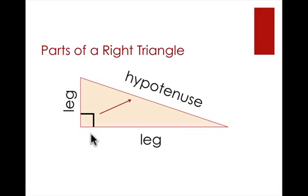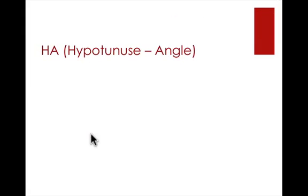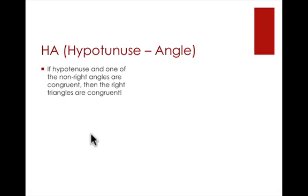The congruence theorems for right triangles are going to be based on H's and L's — hypotenuse and legs. The first one is called HA, or hypotenuse-angle. If you have the hypotenuse and one of the non-right angles congruent, then you can say the triangles are congruent. We're only naming two pieces, but remember we're given the right angle, and right angles are always congruent because they always measure 90 degrees.